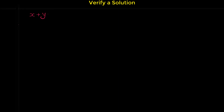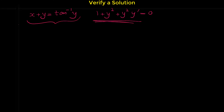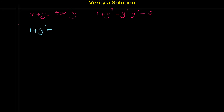Let me show you another example. We want to prove that x plus y equals arctangent of y is a solution for the differential equation (1 plus y squared) plus y squared times y prime equals 0. This is an implicit relation, so for finding y prime we have to do implicit differentiation.